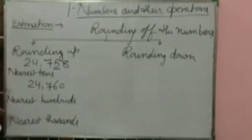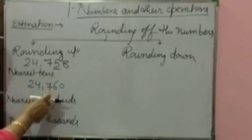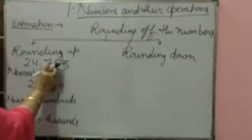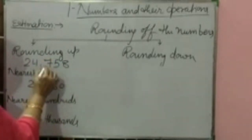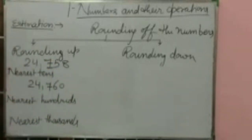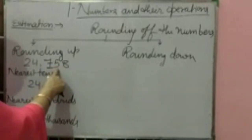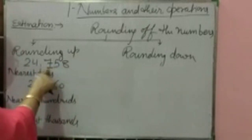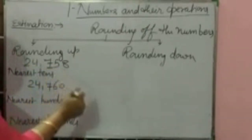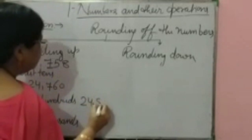Next: round off 24,758 to the nearest hundreds. For nearest hundreds, underline the digit which is in the hundreds place. 7 is in the hundreds place. Just after 7, to the right side of 7, is 5. Since 5 is 5 or more, 7 gets plus 1. So the new number is 24,800.